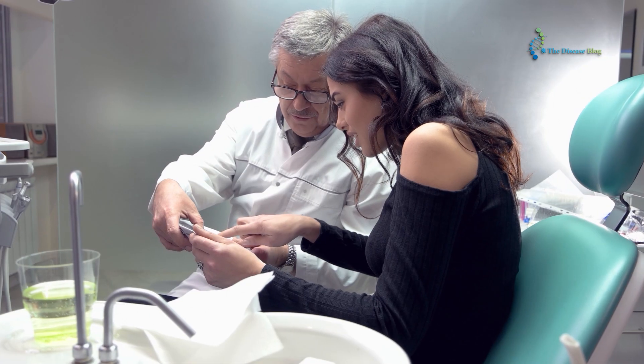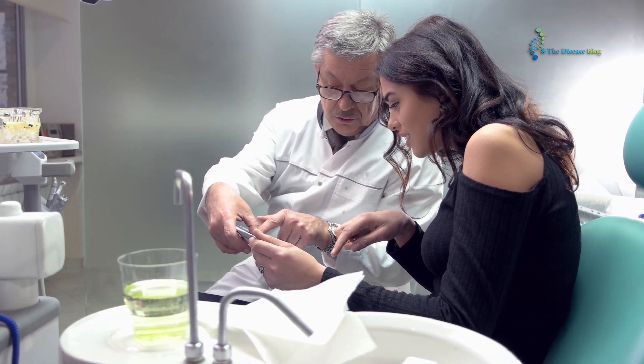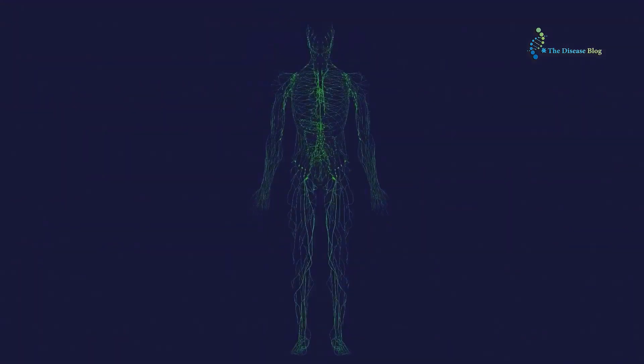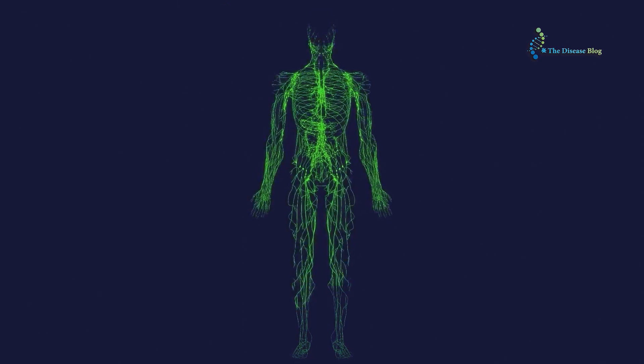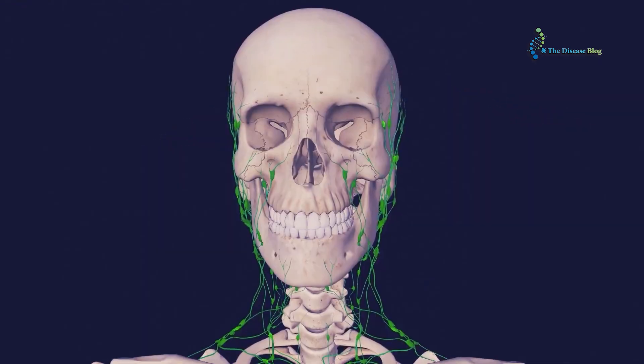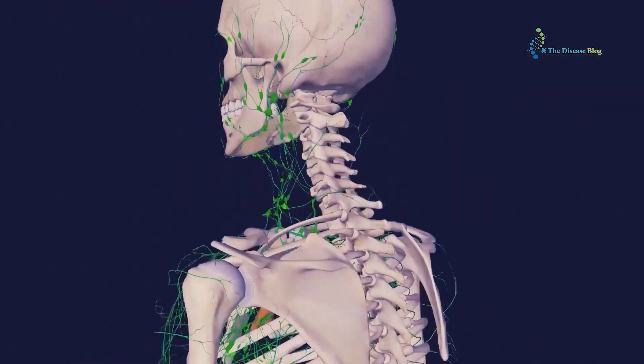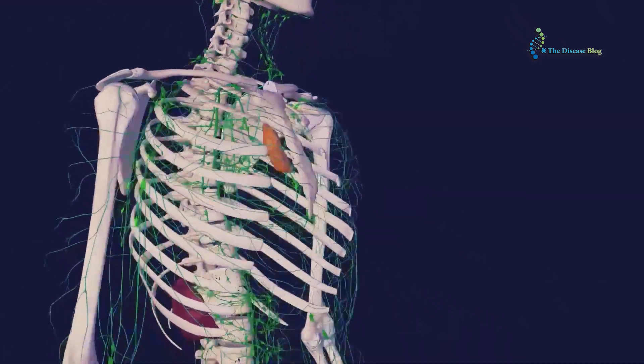Lymphatic filariasis, also referred to as elephantiasis, is a disease caused by obstruction of the lymphatic system in humans. The human lymphatic system is a subsystem of the circulatory system consisting of a vast network of vessels and tissues that are responsible for keeping healthy fluid volume in the body.